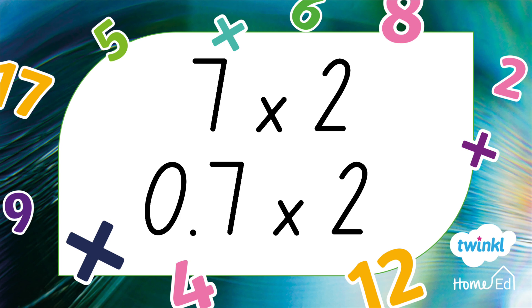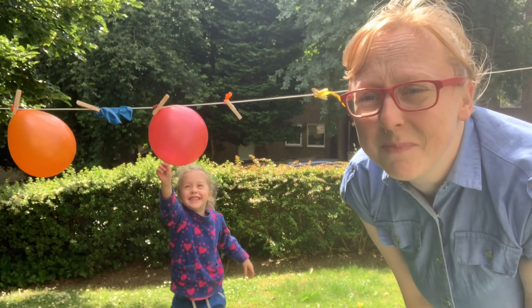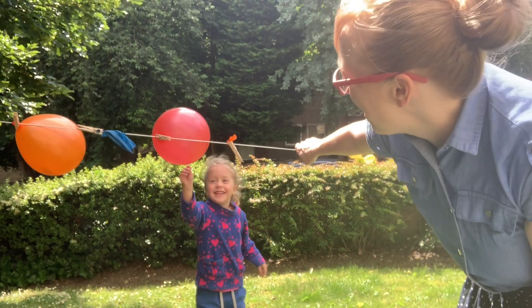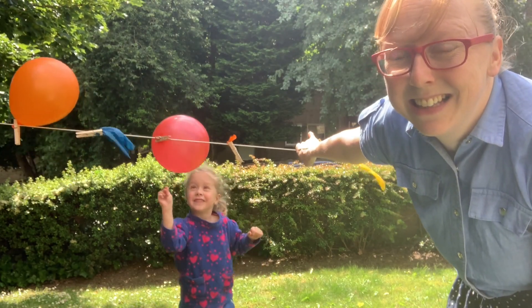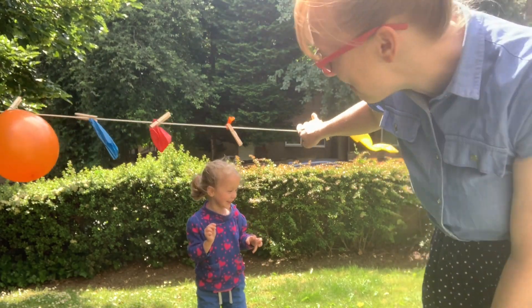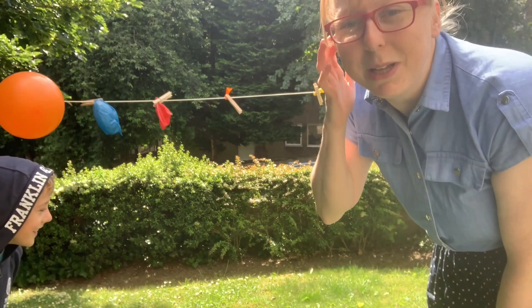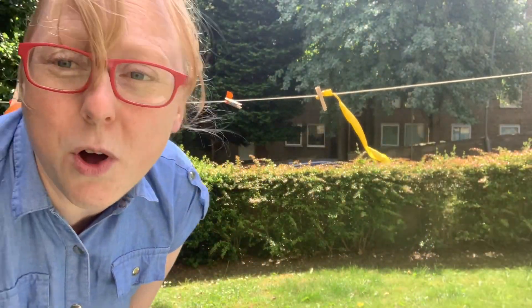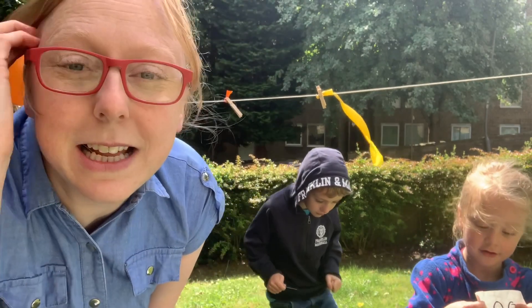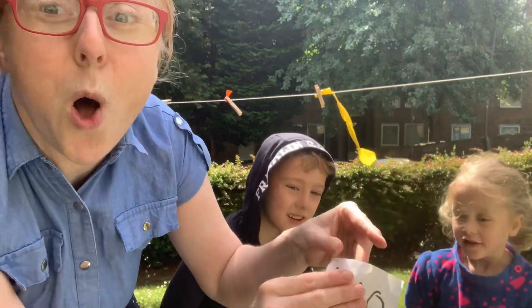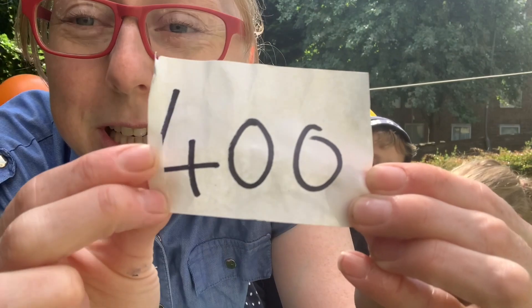Next question: What is 7 times 2? What is double 7? The answer is 14, or 1.4 for the decimal challenge. Amelia pops a balloon — she gets 400 points! That brings her team's total to 700 points. We're halfway through the quiz.